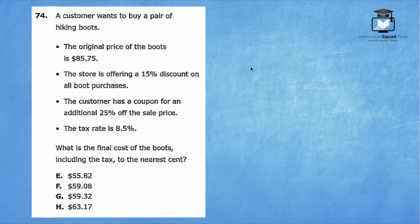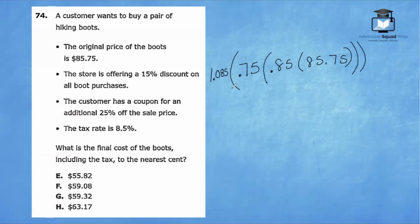Let's start off by calculating the 15% discount. Remember, when applying a 15% discount, you're really paying 85% of the price. So we're going to multiply 0.85 times 85.75. Whatever that value is, the customer also has a 25% off coupon. So guess what? They will only be paying 75% of this price. And finally, the tax rate is 8.5%. So technically, we want to go ahead and multiply by 1.085. This is the fastest way to solve this problem.